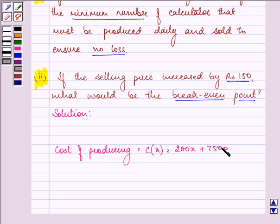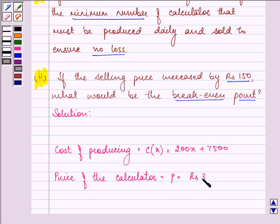We are given that each calculator is sold for Rs. 350. So the price of the calculator, P, is given to us as 350.